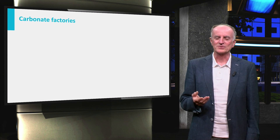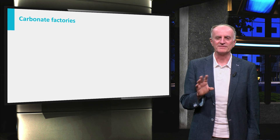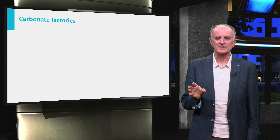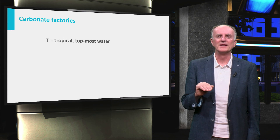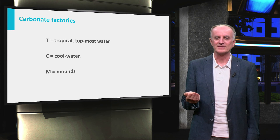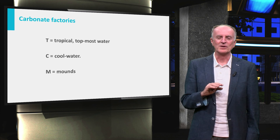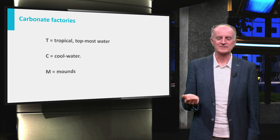Based on the processes controlling carbonate production, we define two types of factories: the tropical factory, the cool water factory, and the mud mound factory. In this course, we will only look at the first one, which is by far the most important.